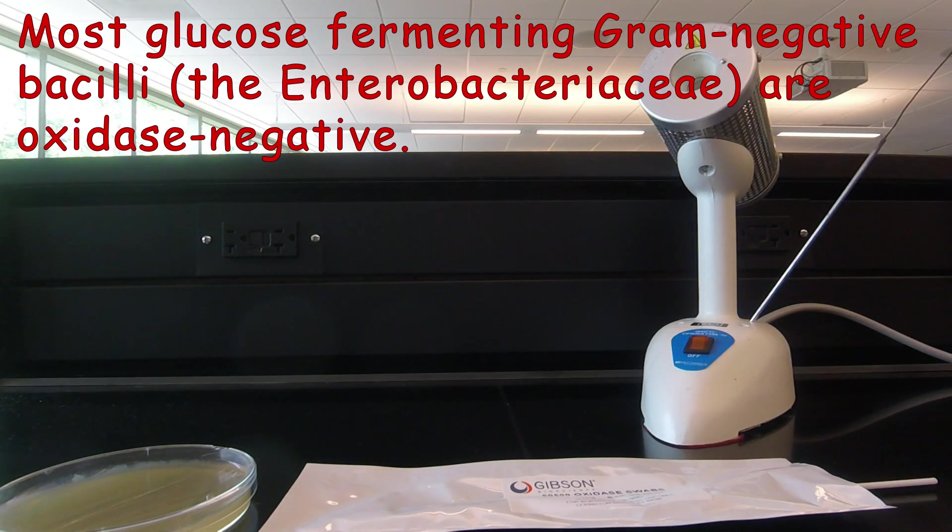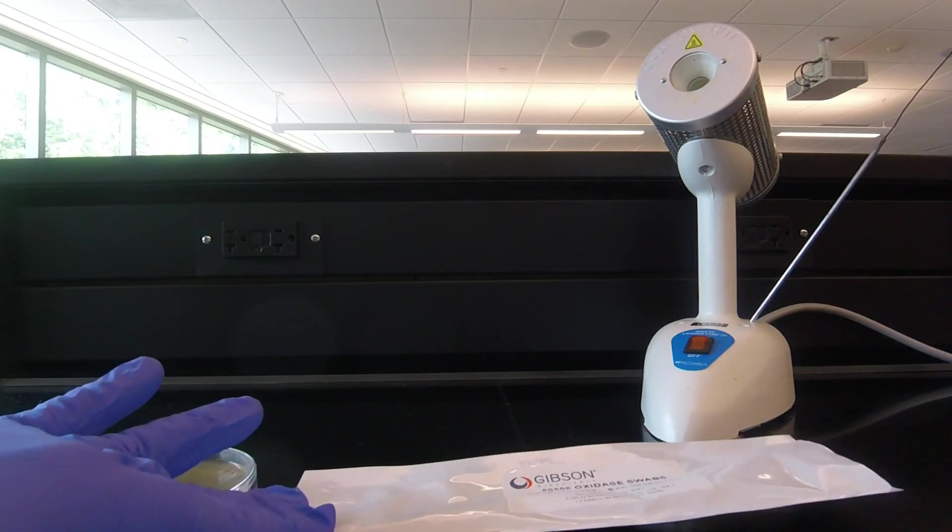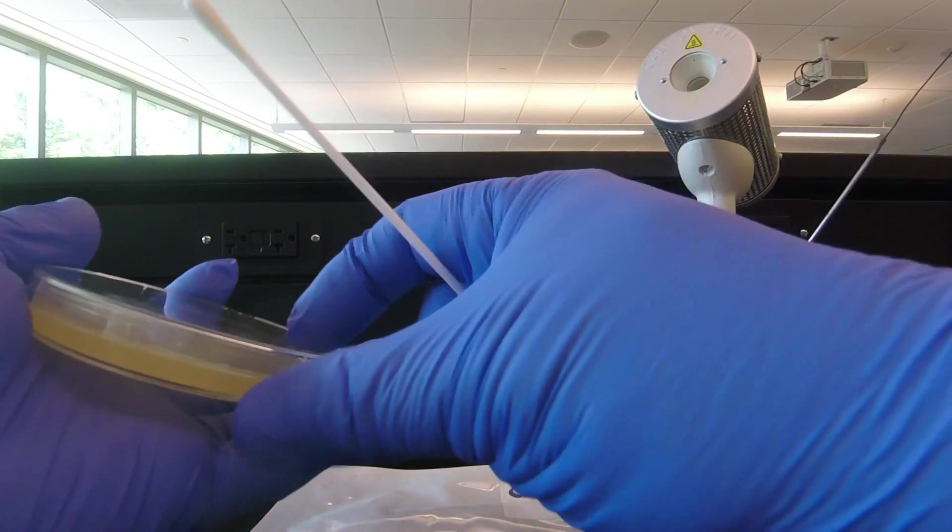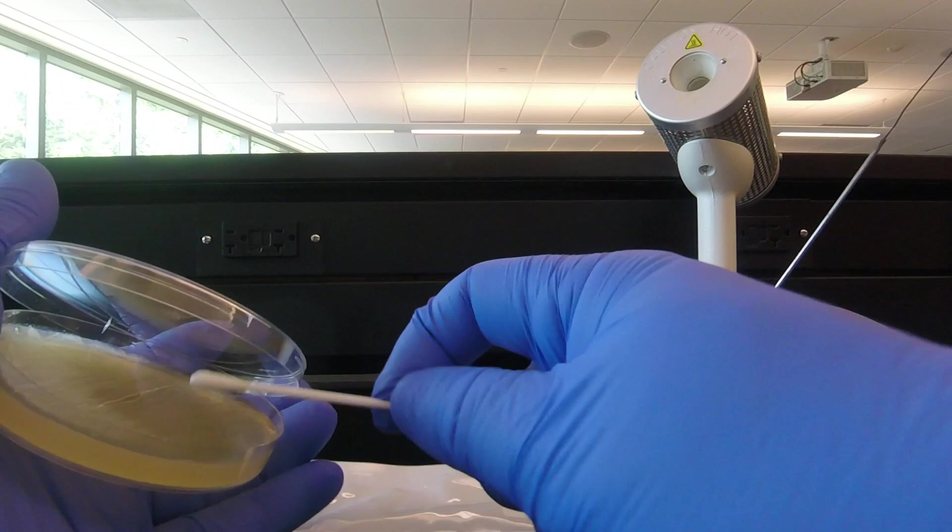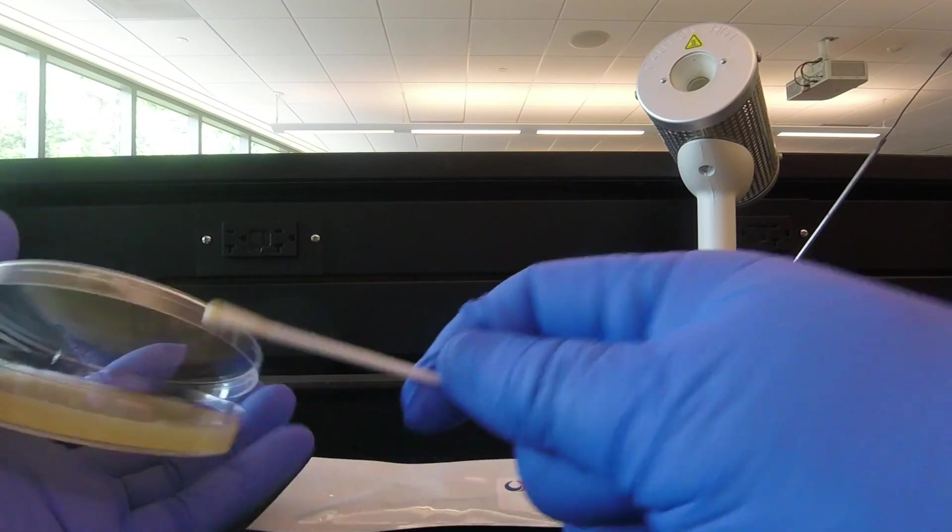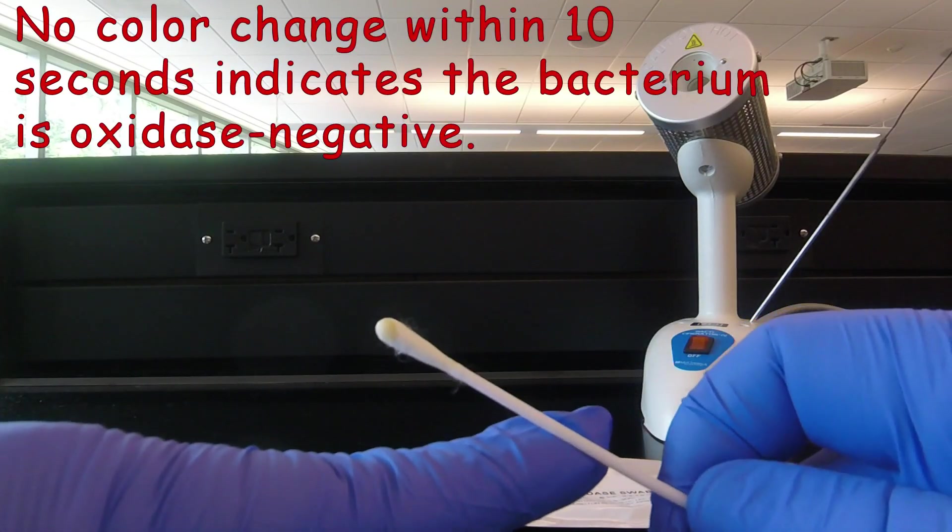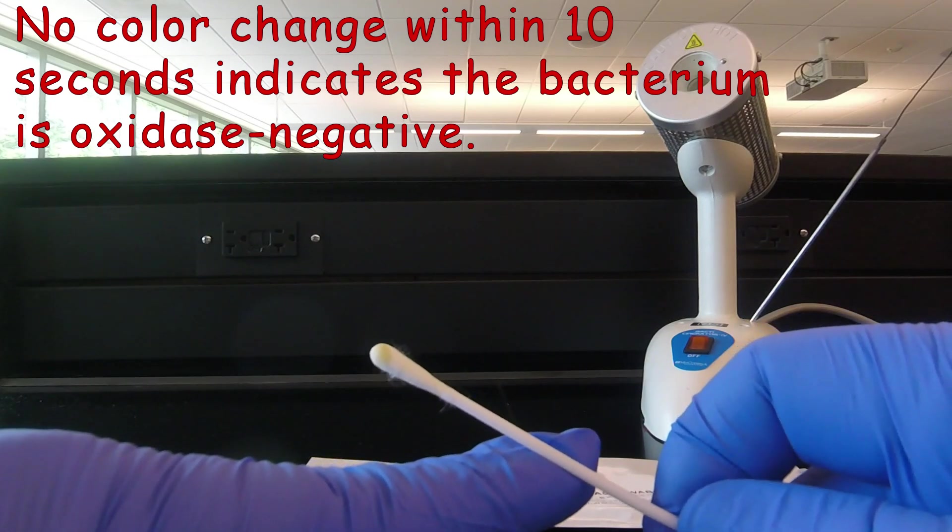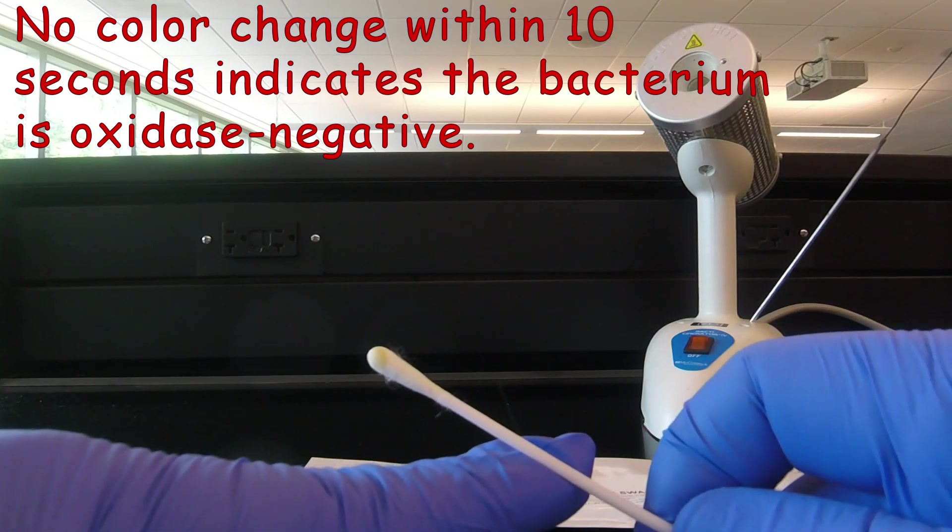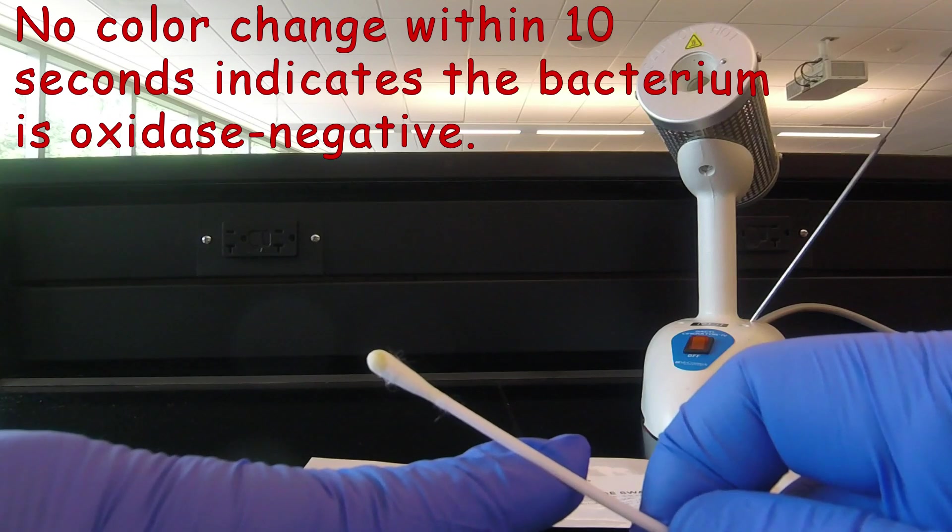So again, we take our oxidase swab, scrape off a little bit of bacteria, and as we see, there's no color change occurring. So this organism is oxidase-negative.